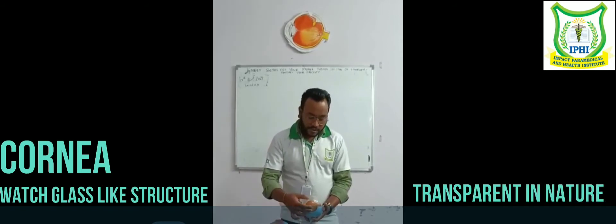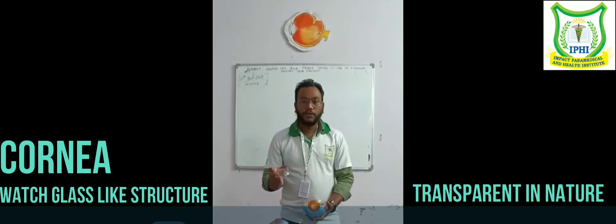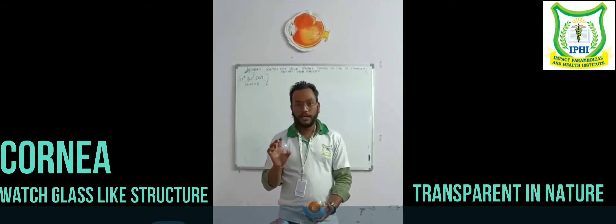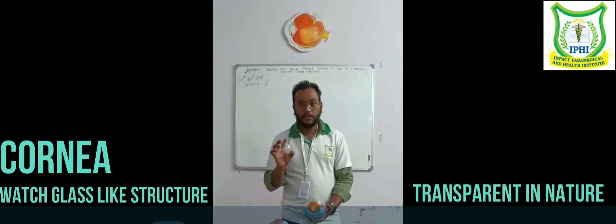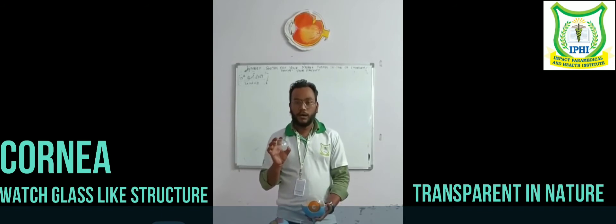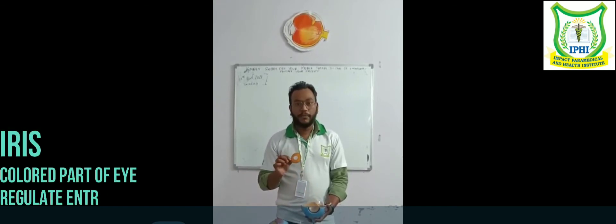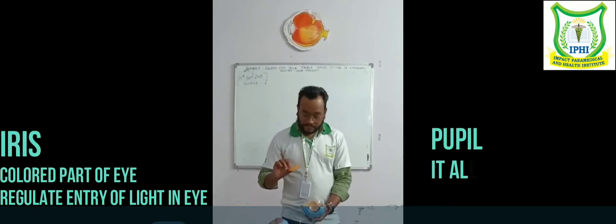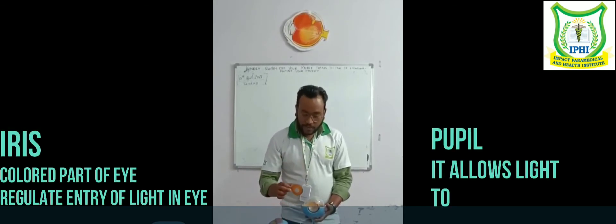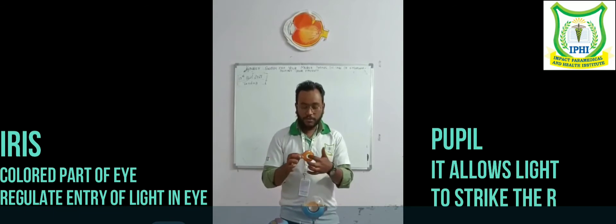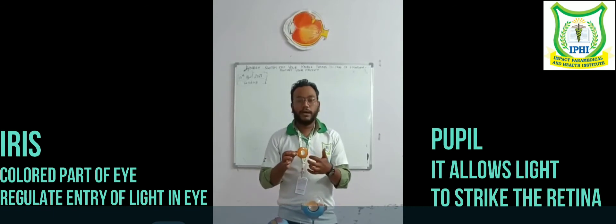This is our cornea, which is the transparent part — the front part of the eyeball. The back side of the eyeball is the iris, which is the colored part of the eyeball. Then the center wall is called the pupil.